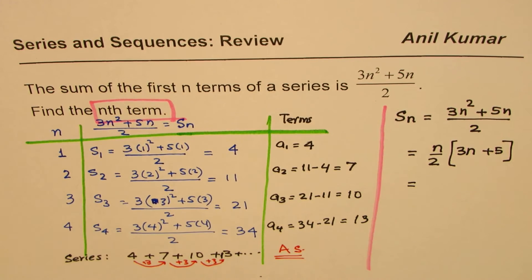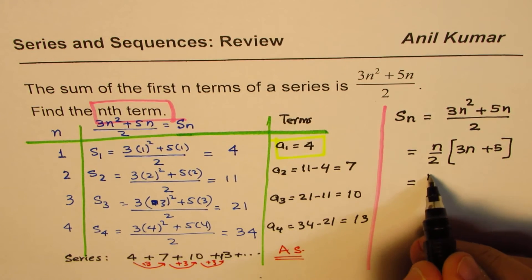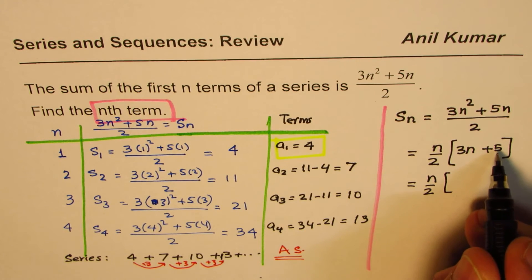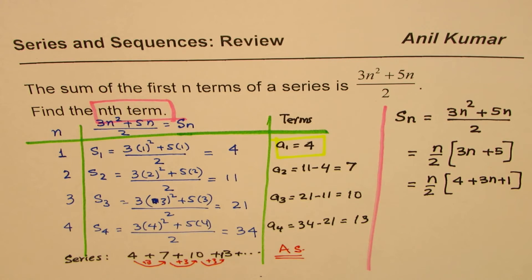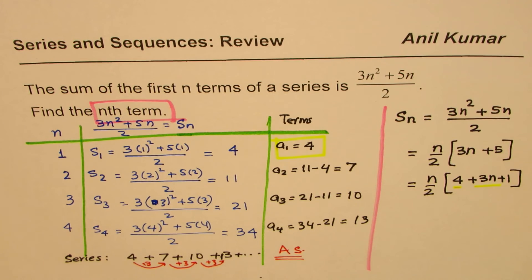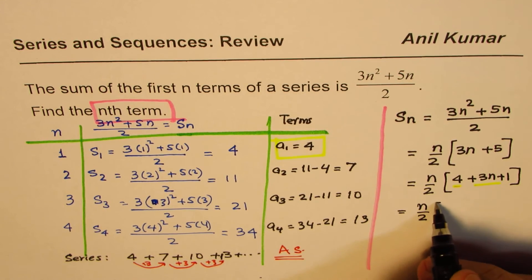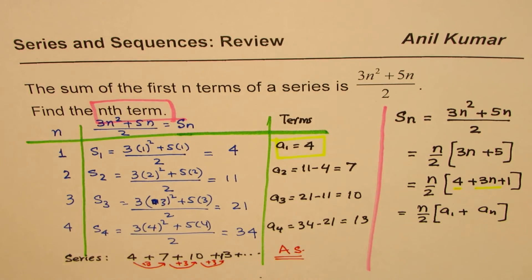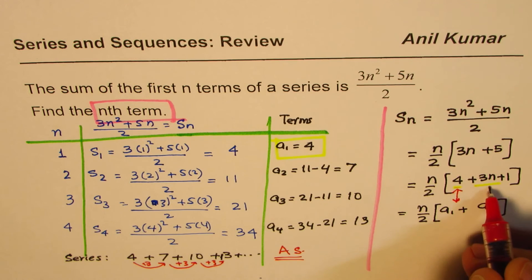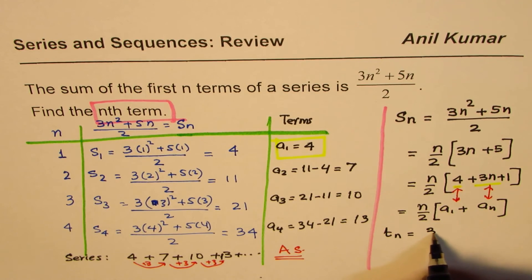We know the first term is 4, so we rewrite the bracket by writing 5 as 4 plus 1, giving n over 2 times (4 plus 3n plus 1). We know the formula for the sum of n terms is Sn = n over 2 times (first term plus nth term). Comparing these formulas, the first term is 4 and the nth term is 3n plus 1.